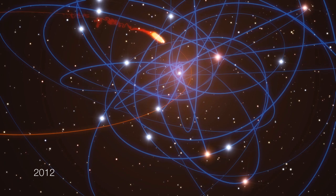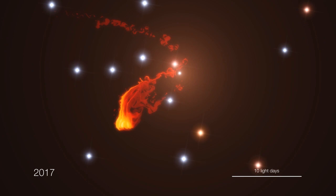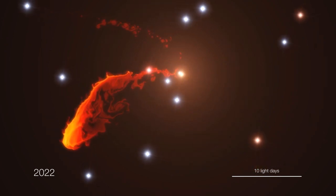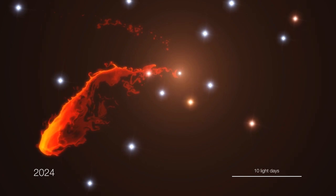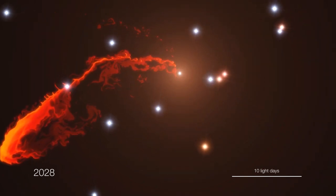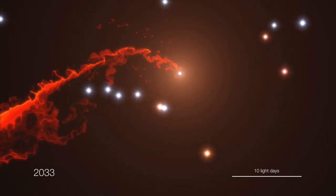No one knows what will happen next. The cloud will probably heat up and may start to emit powerful X-rays as it gets disrupted. In the end, the material will eventually disappear by falling into the black hole. For the scientists, this event is truly a unique chance to probe the hot gas around the black hole.